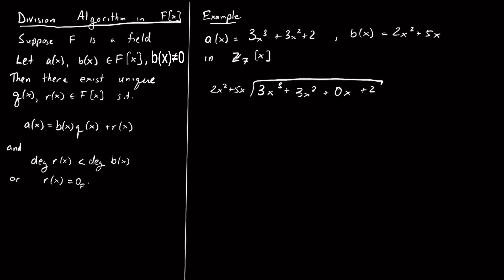Following the same strategy, I look at the leading term 3x³ and ask: in Z mod 7, what should I multiply 2 by to get 3? I notice 2 × 5 = 10, which equals 3 in Z mod 7. To go from x² to x³ I multiply by x, so the term I multiply by is 5x. Then 5x × 2x² = 10x³ = 3x³, and 5x × 5x = 25x² = 4x² in Z mod 7.